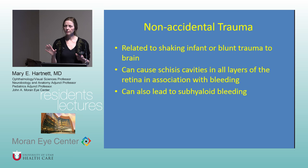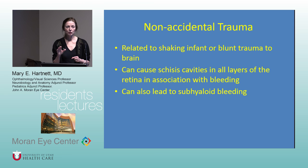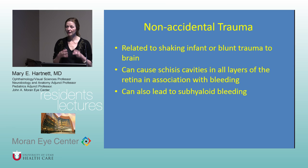A brief word on non-accidental trauma: it's related to shaking or blunt trauma to the brain, and you can get schisis cavities and bleeding in all layers including just under the hyaloid. If you have a child with sub-hyaloid bleeding that doesn't clear, it can be helpful to do surgery to remove the blood so they don't develop anisometropia.